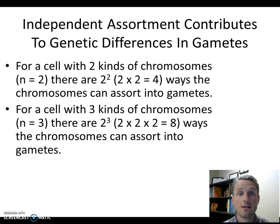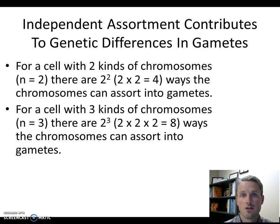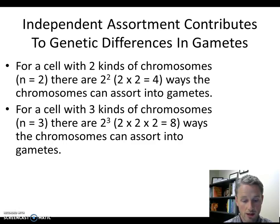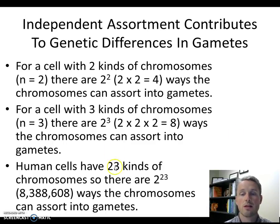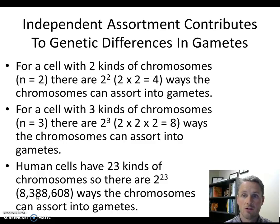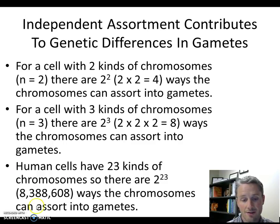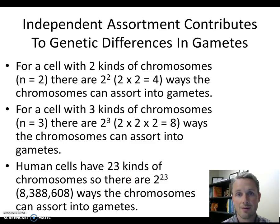Human cells contain 23 different kinds of chromosomes. To figure out the number of different ways we can sort each of those 23 chromosomes into a gamete, we calculate 2 to the 23rd power. That's almost 8.5 million different ways that we can create gametes just by aligning those chromosomes independently. This is the factor that means we create so many genetically different gametes during meiosis.